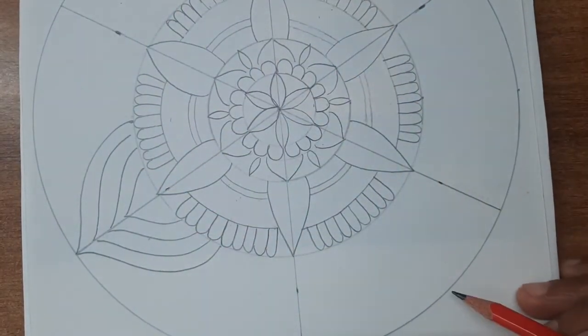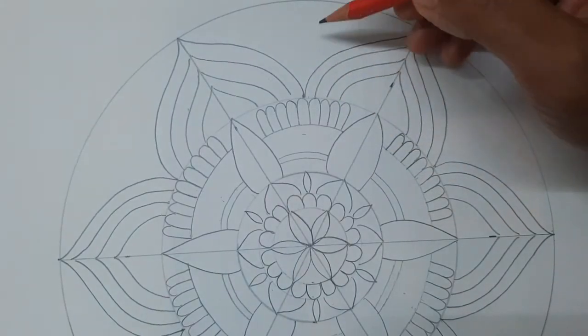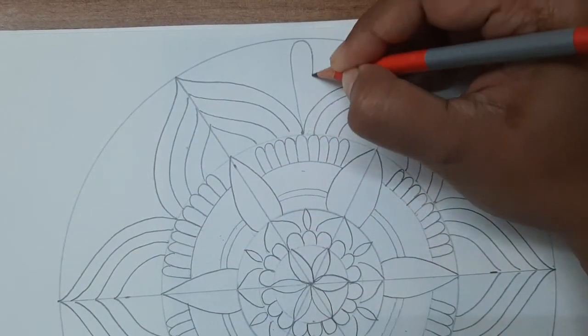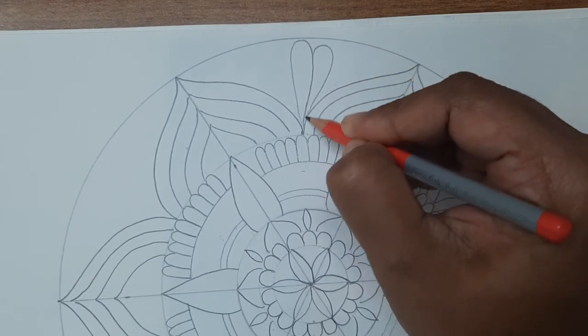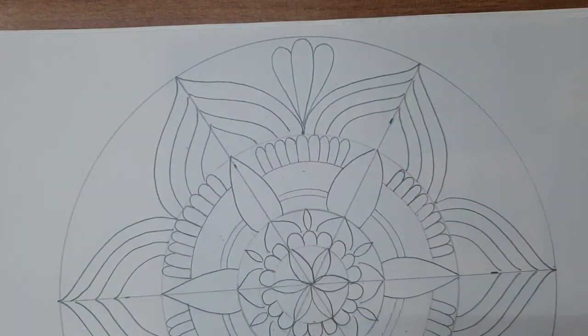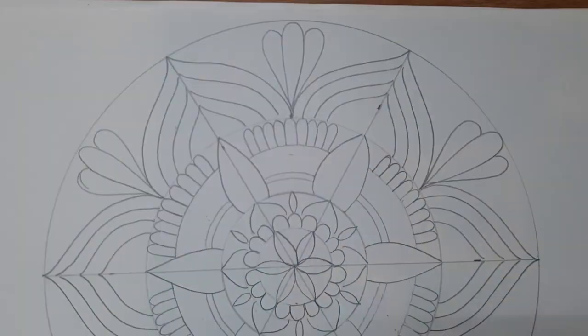In between any two petals here, we would draw a simple pattern like this. Probably we may add one on either side of this. Like this we would complete the entire mandala.